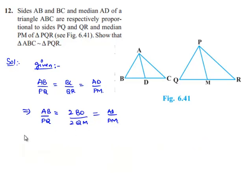Which implies AB by PQ is equal to, here 2 and 2 will be cancelled, BD by QM is left which is equal to AD by AM.